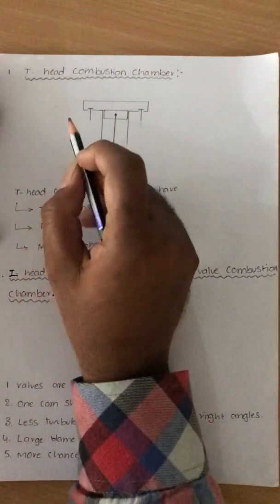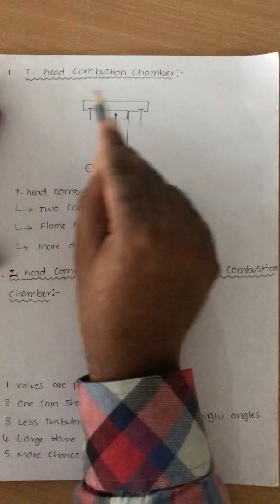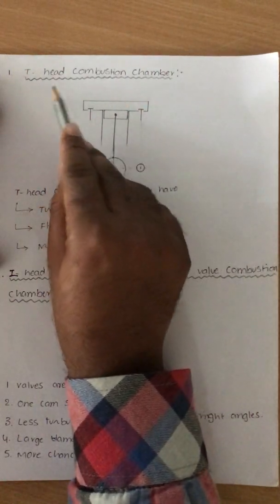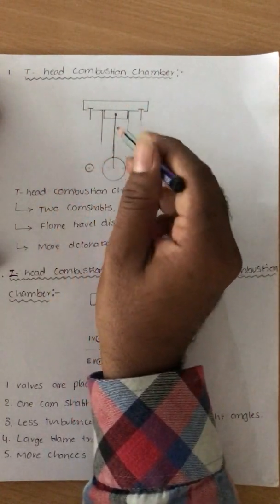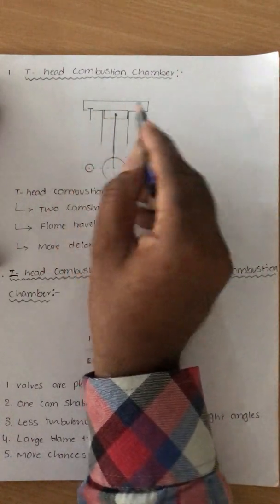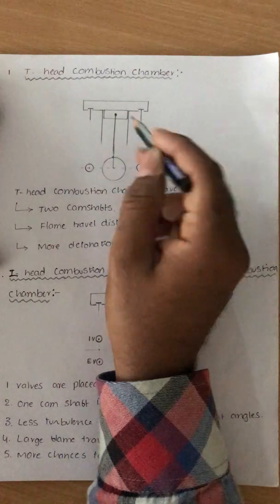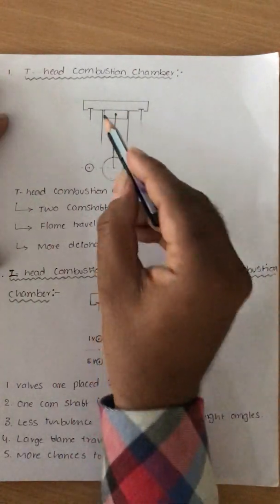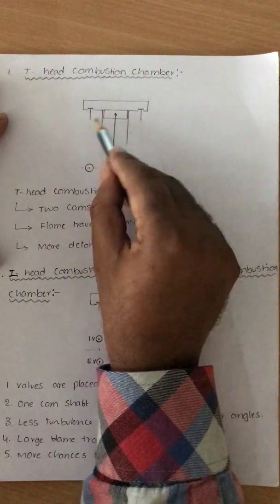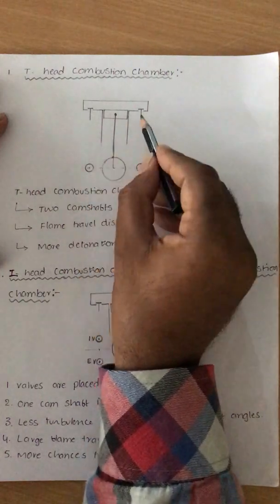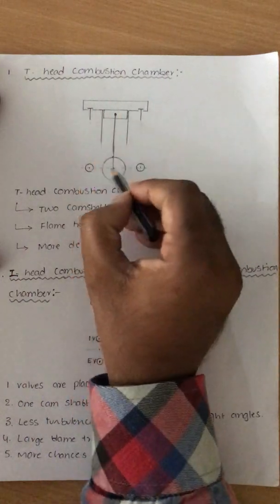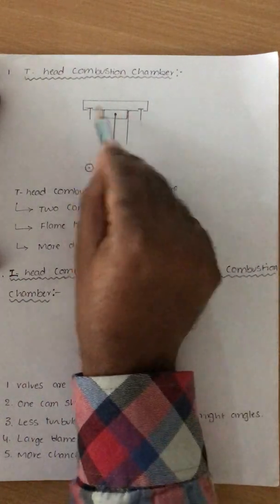First of all we should think about the T-head combustion chamber. The name itself indicates T-head, that means the geometry of the engine is like a T shape. So that is why we call it as a T-head combustion chamber. The figure represents the T-head combustion chamber. This is one wall and this is another wall — may be inlet wall or exhaust wall — with the piston cylinder arrangement, camshaft, connecting rod, and the cylinder head.